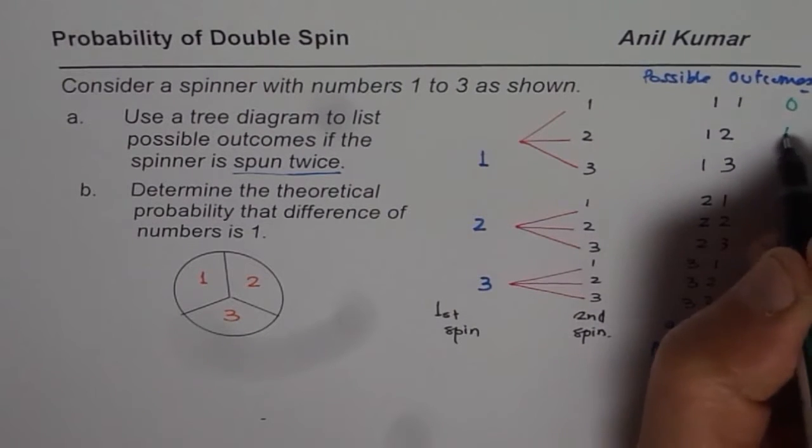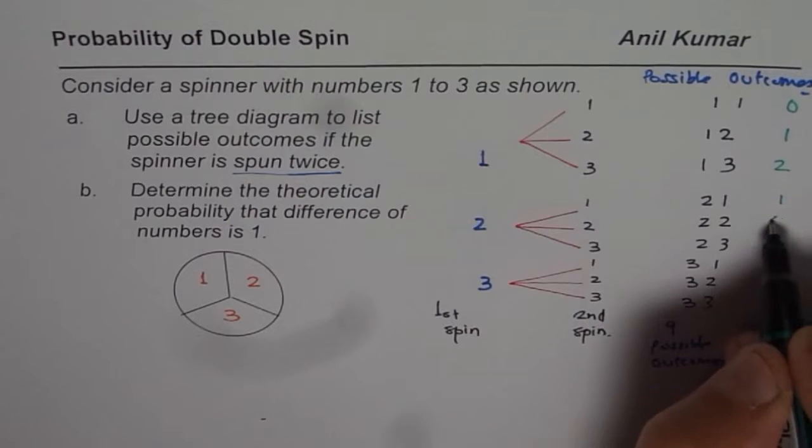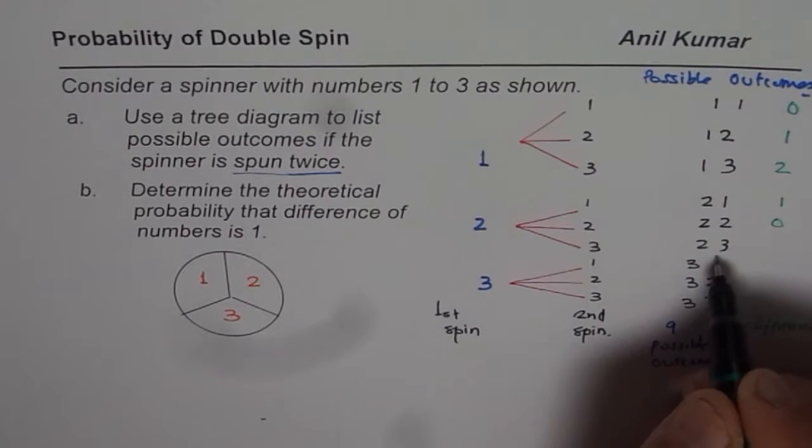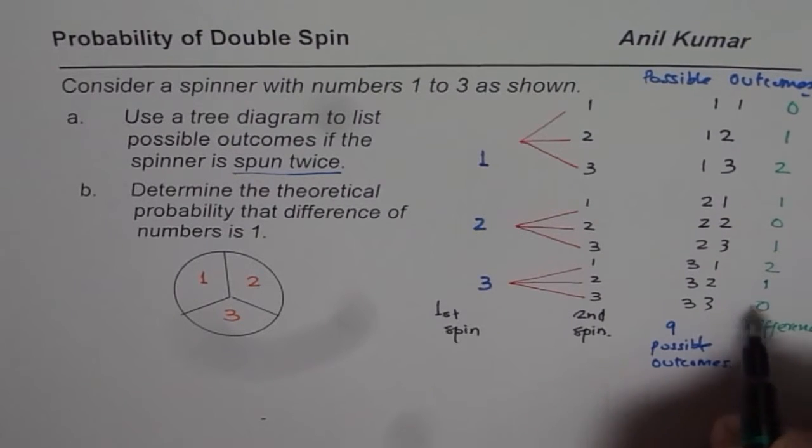Difference here is 0, here it is 1, here in this case it is 2. Difference here is 1, difference is 0. In this case, 2 and 3 is also 1. We can do 3 minus 2, you get the idea. So 3 minus 1 is 2, 3 minus 2 is 1, 3 minus 3 is 0.